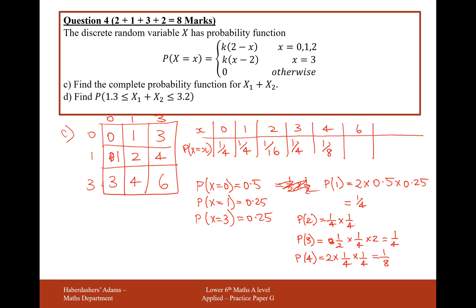The probability of rolling a 6, when you add these two values together, is going to be a quarter times by a quarter, which is 1 16th. And you can always do a quick calculation here, that all of these values should add up to make 1.